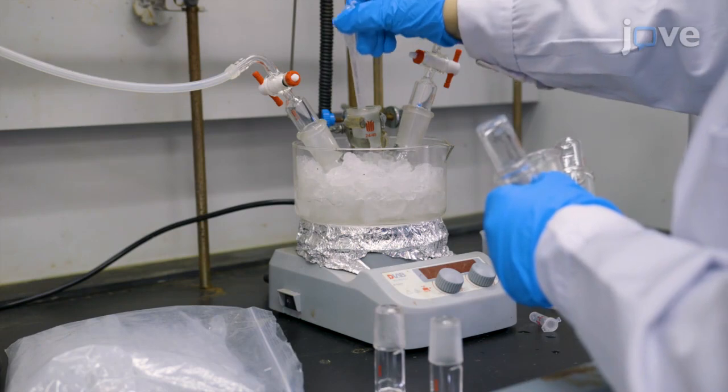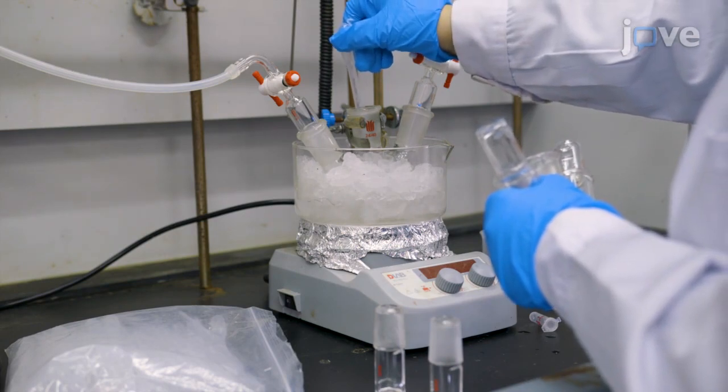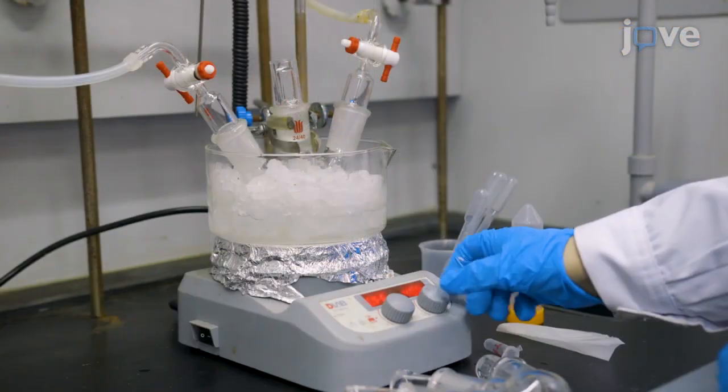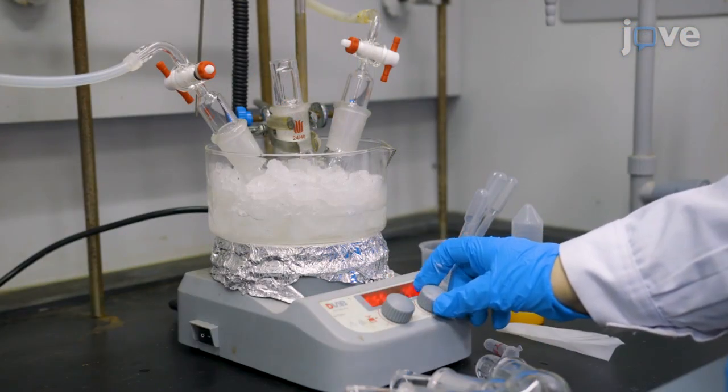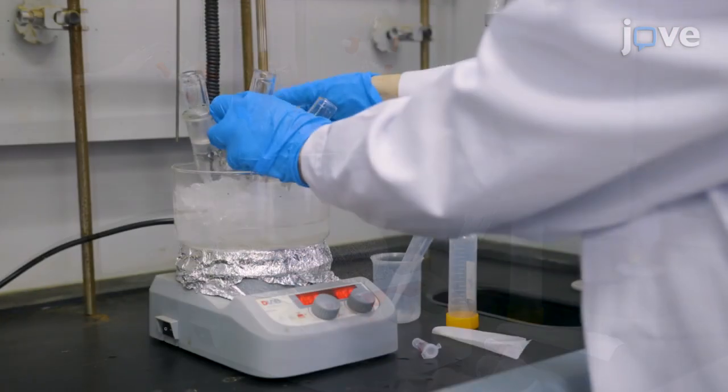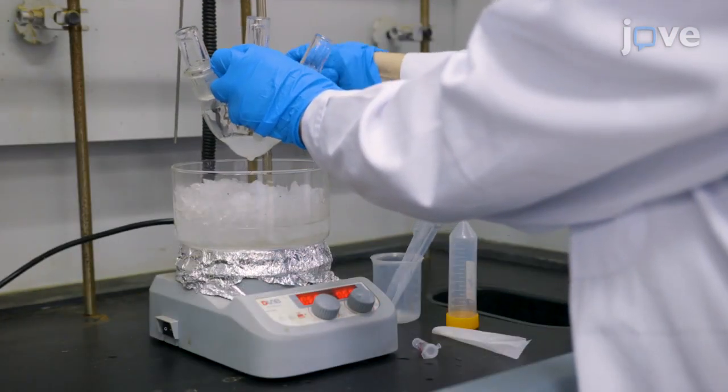At the end of the incubation, use a syringe under nitrogen atmosphere to slowly transfer this second solution to the first flask. Stir the new solution for 2 hours at 0 degrees Celsius before continuing the reaction at room temperature overnight.